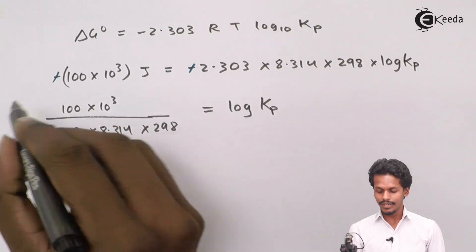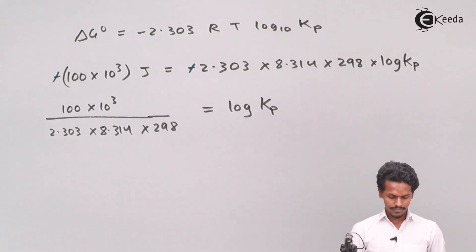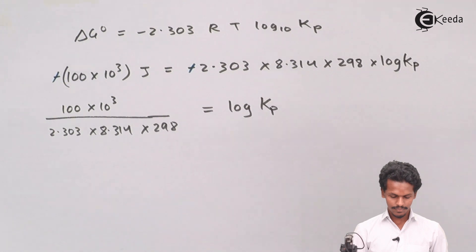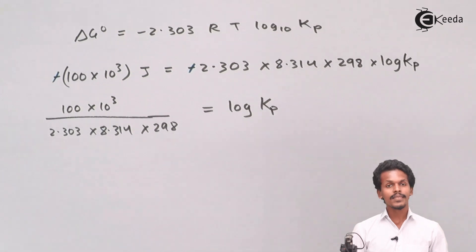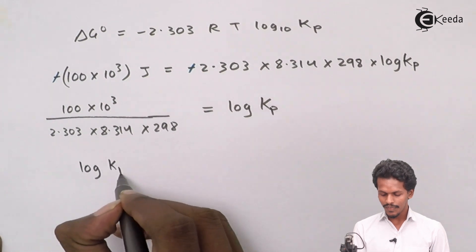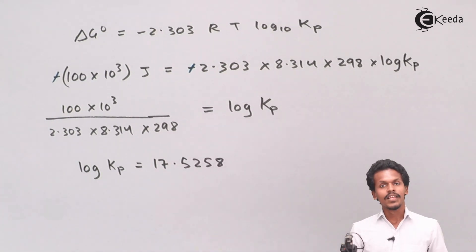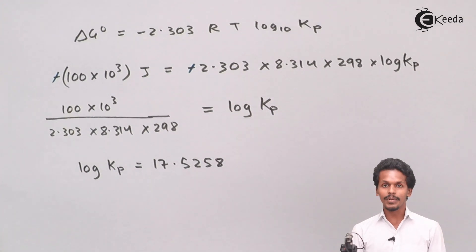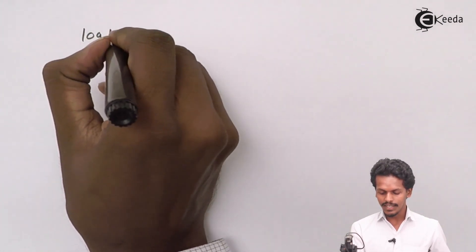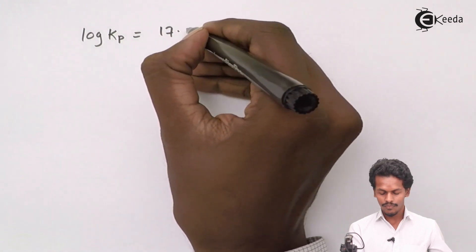We have obtained a value of log Kp = 17.5258. This is the value of log Kp. Now we have to calculate the actual value of Kp, which is very easy to do.